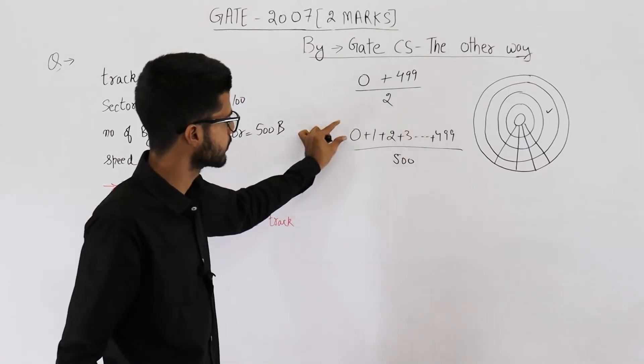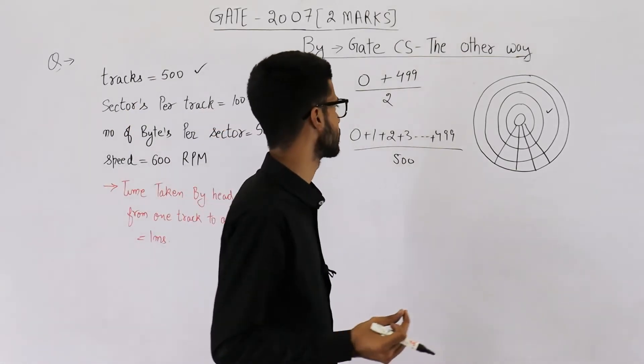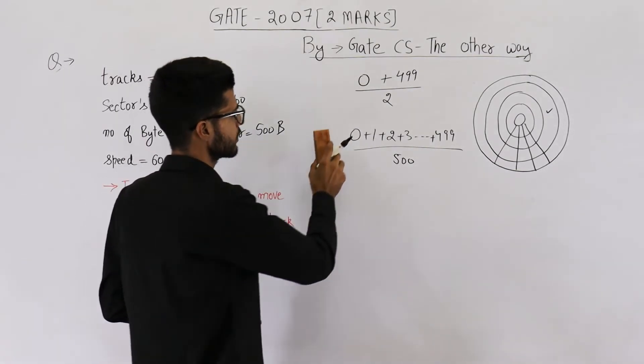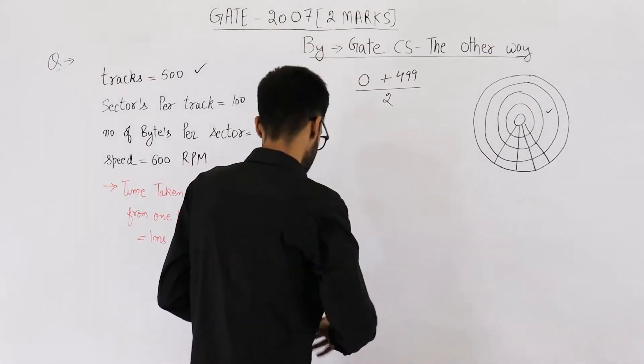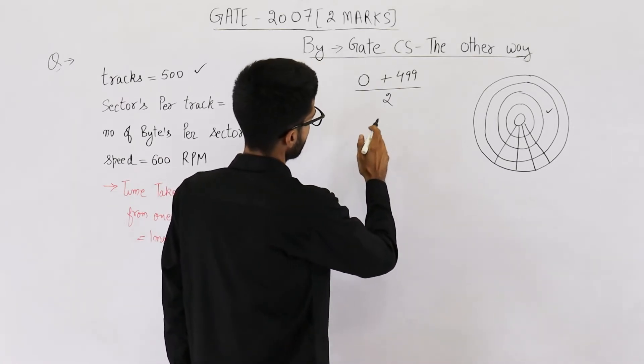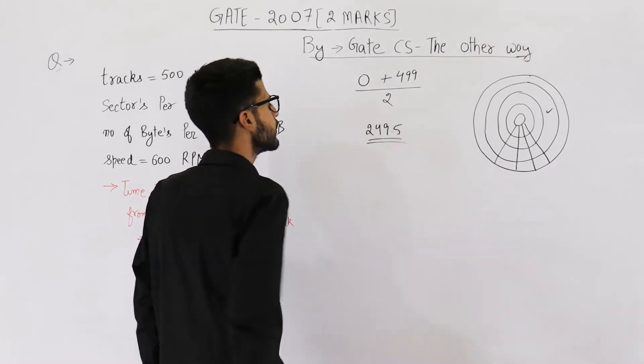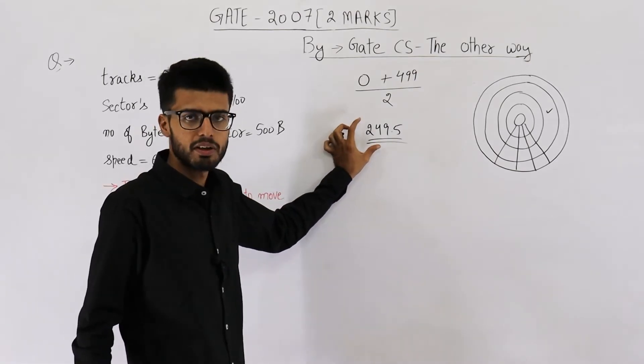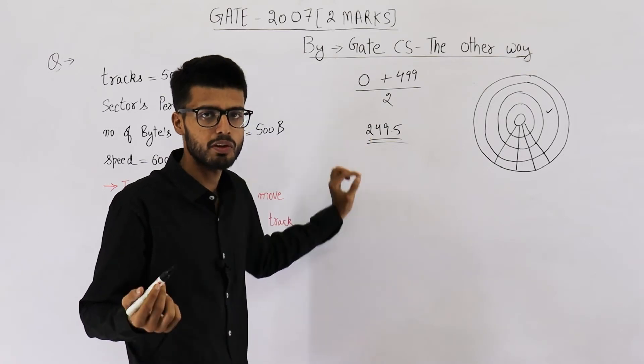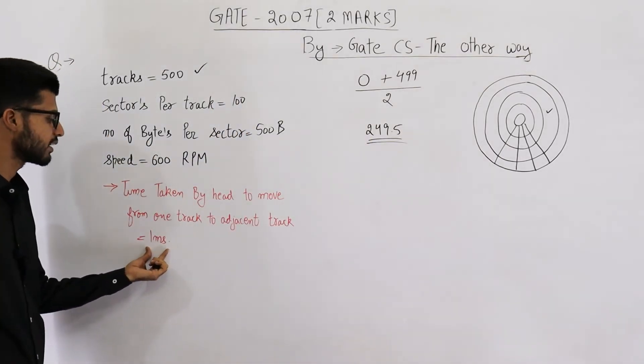Add all the readings, take their average by dividing this sum by total number of readings. Both of these will lead to the same result. So let's see what the result is going to be. It will be 250 minus half, 249.5. So these many movements will be required.